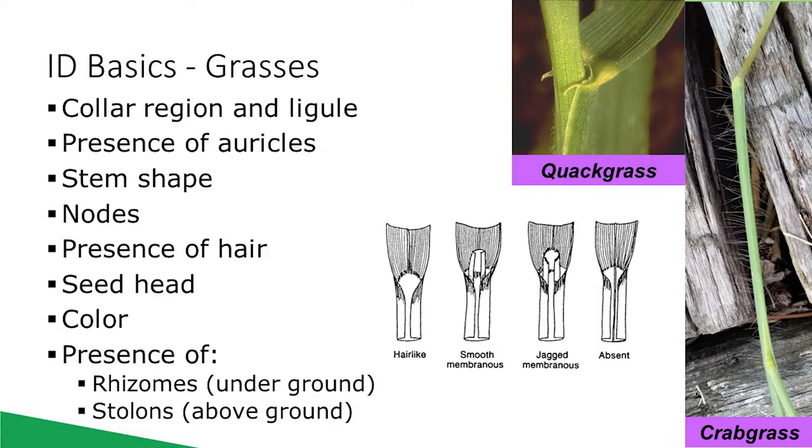To simplify matters, we'll focus on the two major types of weeds: grasses and broadleaves.